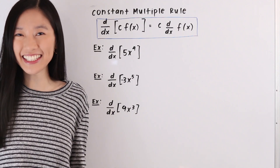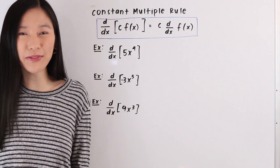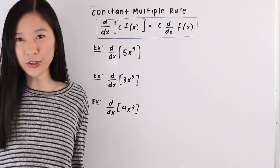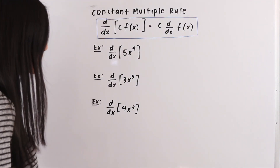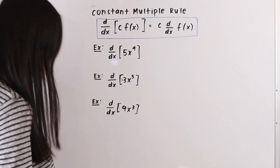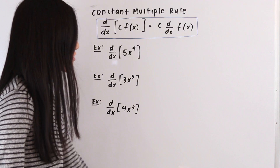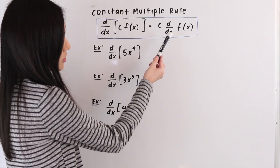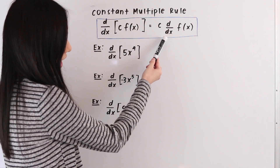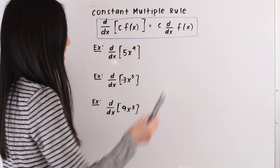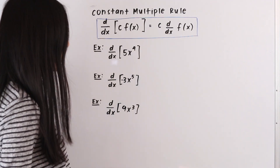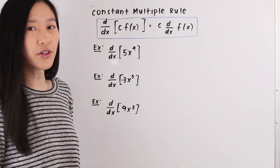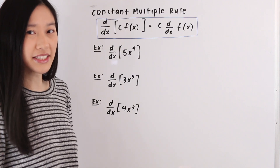Hi everyone, it's Shanane here and in today's video we are going to be learning about the constant multiple rule. The constant multiple rule tells us that when we take the derivative with respect to x of a constant times a function f of x, it is equal to the constant times the derivative with respect to x of the function f of x. Essentially, this means we can take the constant outside of our derivative. Let's go ahead and take a look at some examples.